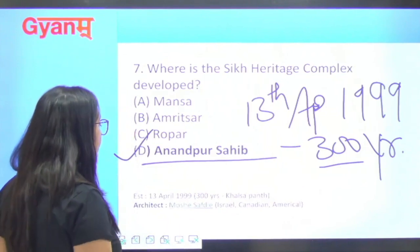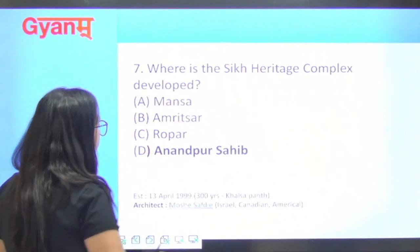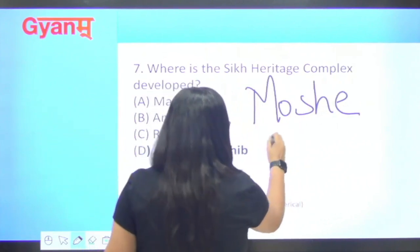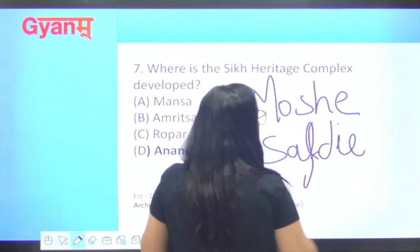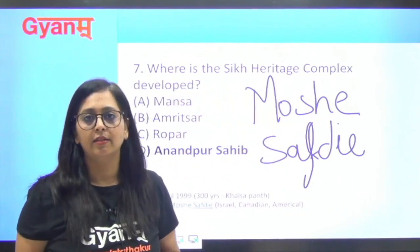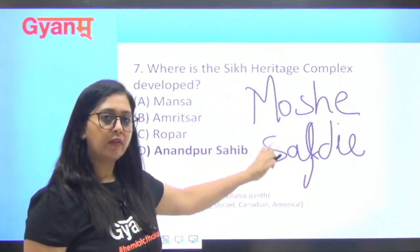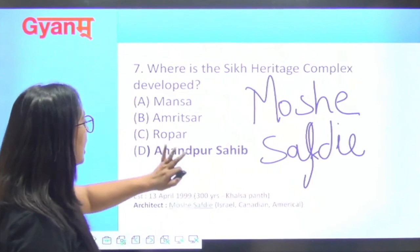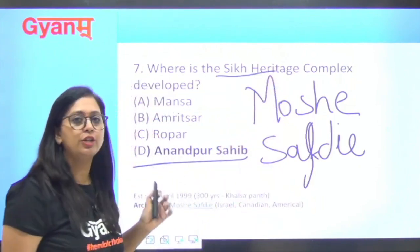The architect of Virasat-e-Khalsa is Moshe Safdie. He is Israeli-born and Canadian-American. Moshe Safdie is the architect of the Virasat-e-Khalsa heritage complex.